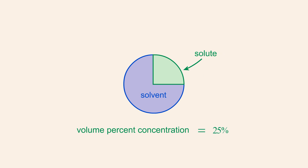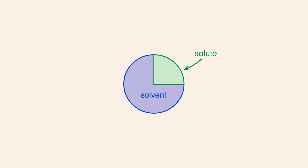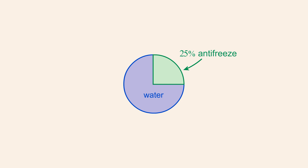Volume percent is usually used to specify concentration when the solution is made by mixing two liquids. For example, in a solution of antifreeze in water the solute is antifreeze and the solvent is water. So a twenty-five volume percent solution of antifreeze is made up of one-quarter volume of pure antifreeze and three-quarters volume of water.